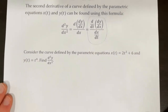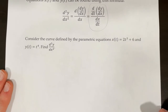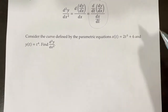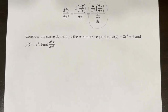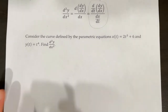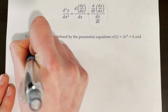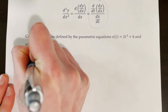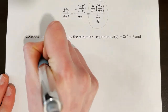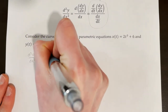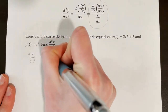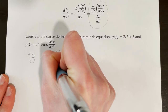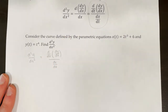Let's practice using this formula with an example. Consider the curve defined by the parametric equations x of t equals 2t cubed plus 6 and y of t equals t to the fourth. Find the second derivative of y with respect to x. I'm going to copy down this formula: the second derivative of y with respect to x is equal to d dt of our first derivative, dy dx, all over dx dt. It would be a good idea to commit this to memory for the AP exam.